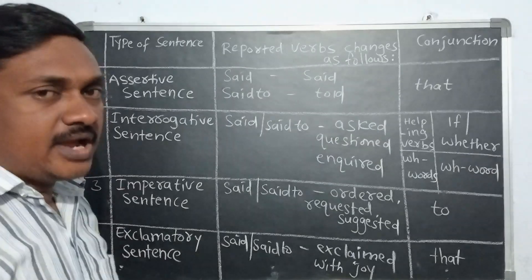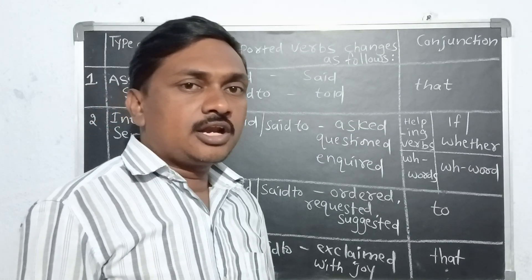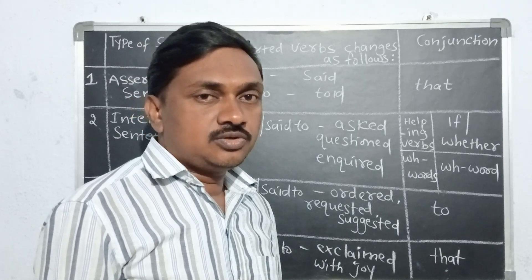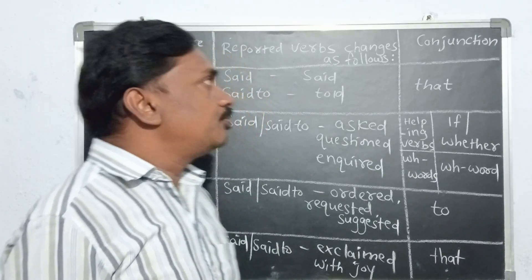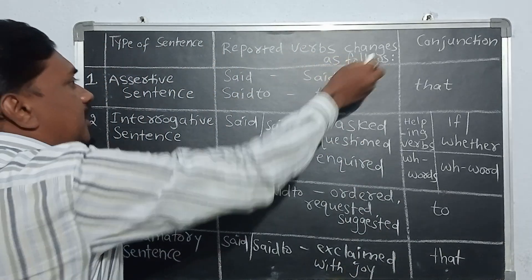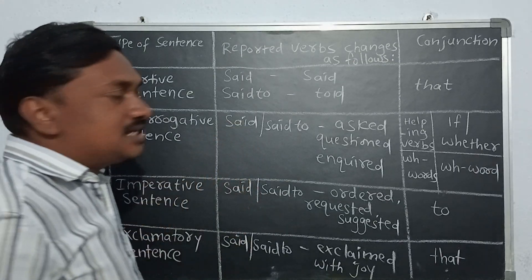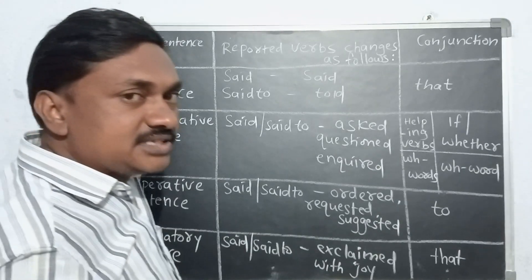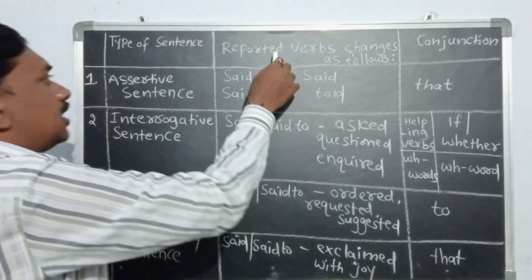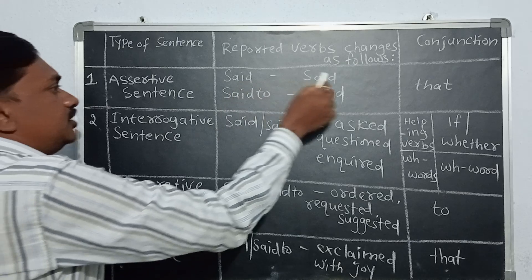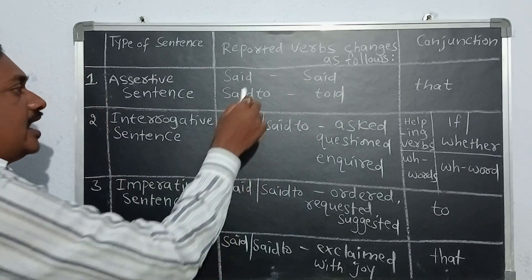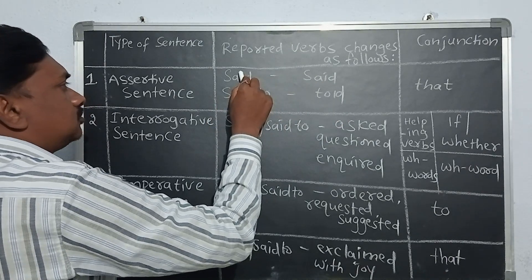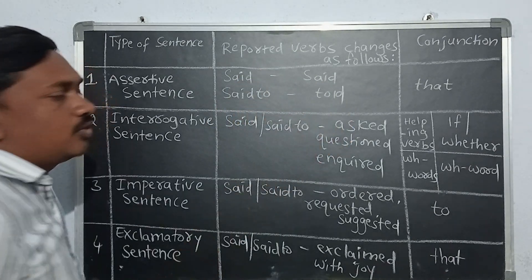The reported verb is the verb which is in the main clause. The reported verb changes as follows: if the subordinate clause has an assertive sentence, the reported verb 'said' remains 'said', and 'said to' becomes 'told'.